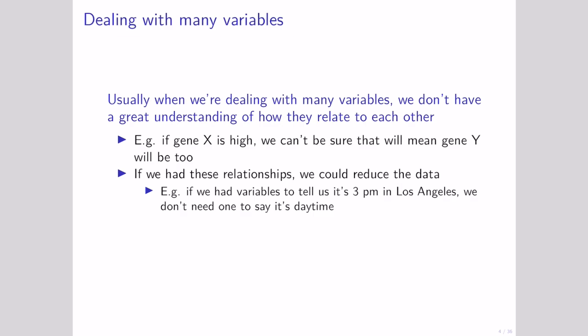Usually when we're dealing with a whole bunch of different variables, we don't really have a great understanding of how they relate to each other. For example, if gene x is high, we might think that gene y might be high too, but we're probably not sure. But if we had these relationships, we could reduce down the data to something smaller.